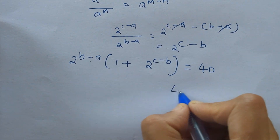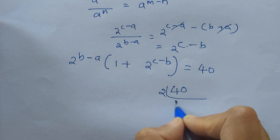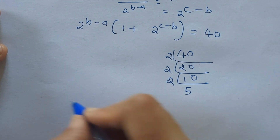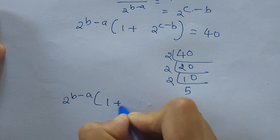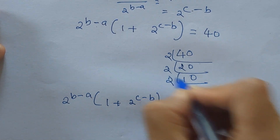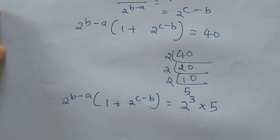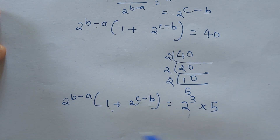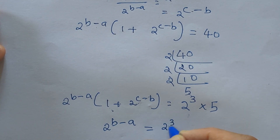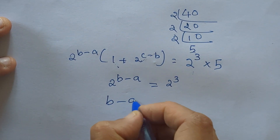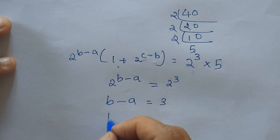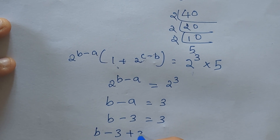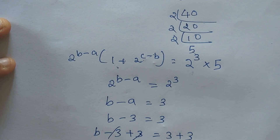Now we can factorize 40 as 2 times 20, times 2 is 10, times 2 is 5. So we rewrite this as 2 raised to B minus A into 1 plus 2 raised to C minus B equal to 2 raised to 3 into 5. From this we can say 2 raised to B minus A equals 2 raised to 3, so B minus A equals 3. Since A equals 3, we get B minus 3 equals 3, so B equals 6.